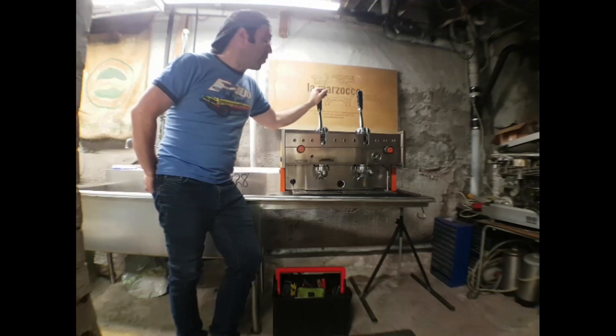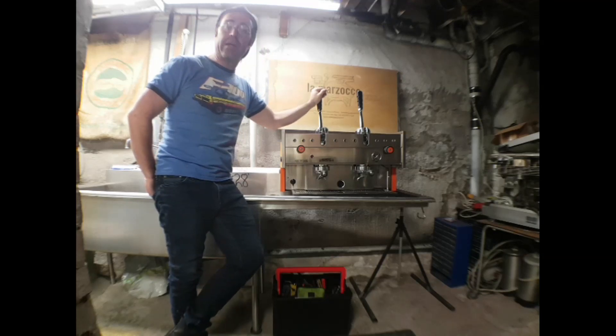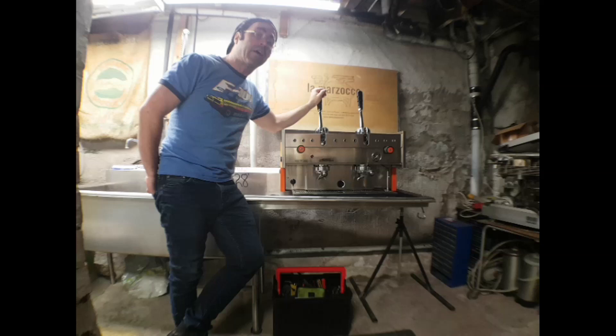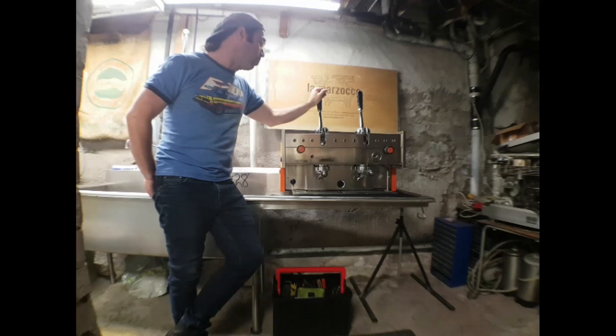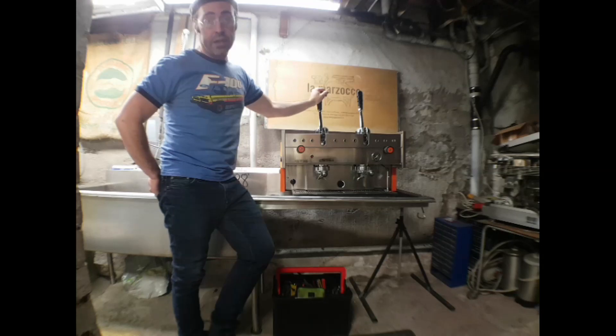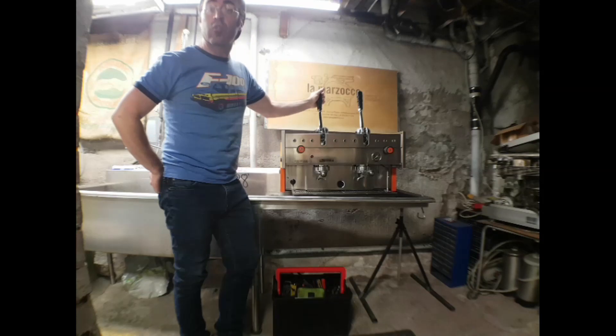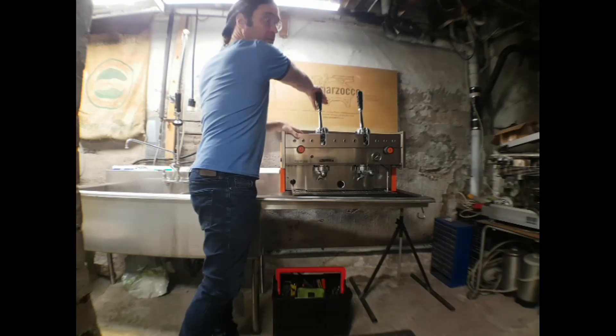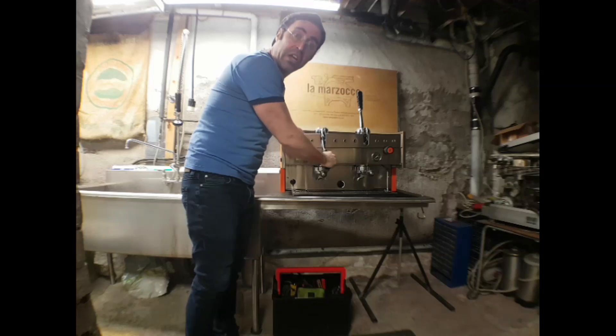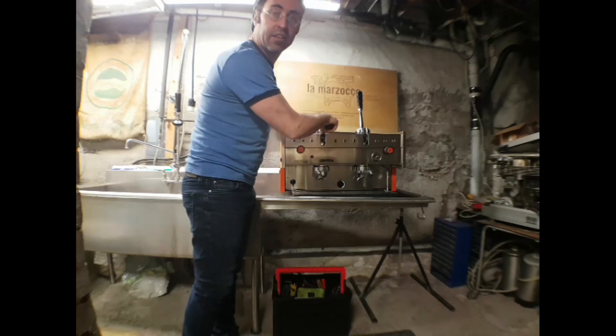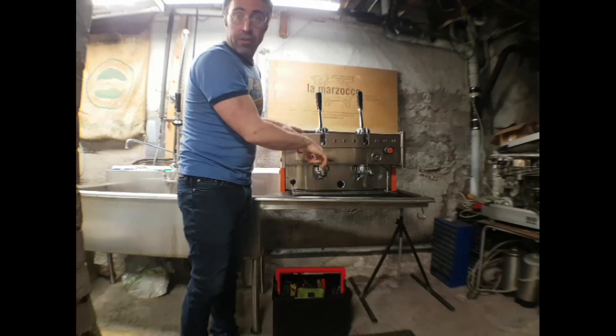All right, so when we're talking about lever machines, well, commercial lever machines anyway, there's a few different major types, but the most iconic and the one I've got in front of me here is the CMA lever group installed in this Astoria machine. The vast majority of commercial lever machines are manually applied spring released. In other words, when you go to pull the lever down, you are setting the spring tension and releasing the lever allows the spring to push the piston down to extract the coffee.